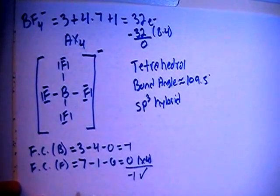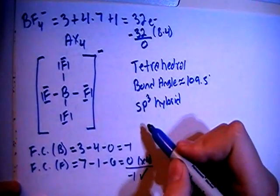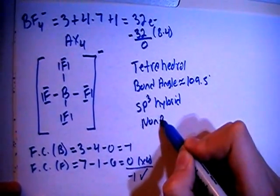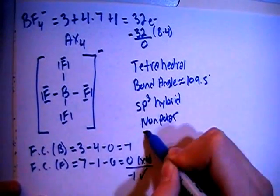and because all of the four peripheral atoms are all the same kind of atom, they're all fluorine, that means that they're all going to cancel each other out in terms of polarity, making this a non-polar ion.